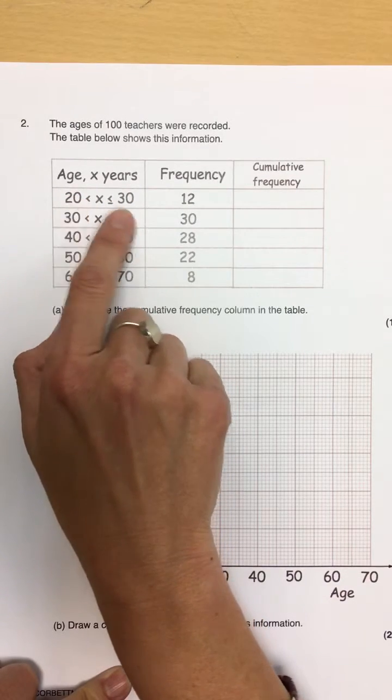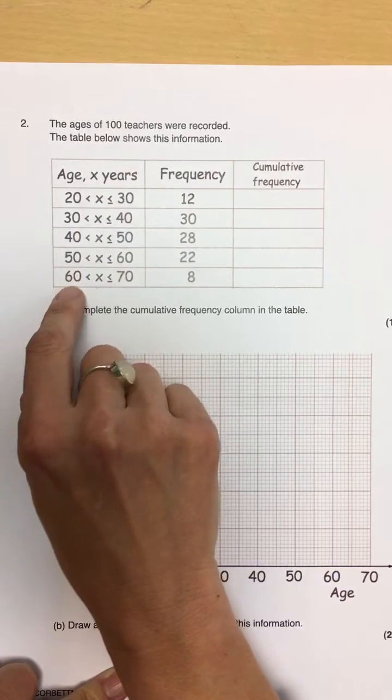So in this case it's age, so people between 20 and 30, 30 and 40, 40 and 50, 50 and 60, 60 and 70, and so on.